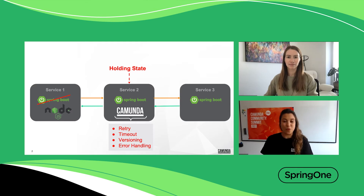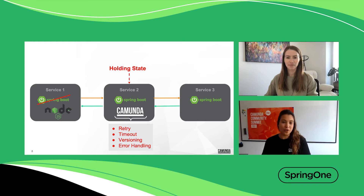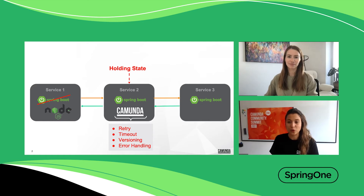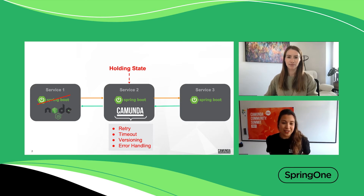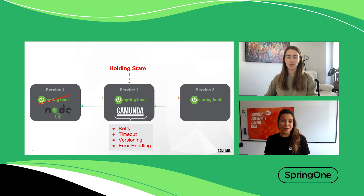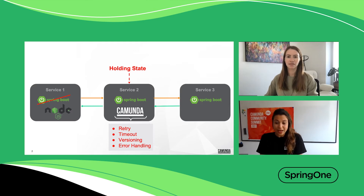By doing so, you also get additional features that will help you to reduce boilerplate code. Camunda helps you to define retries, timeouts, versioning, and error handling — and it does that with a graphical notation that is executable, based on an open standard called BPMN. It's even greater because you can also use it for a whole architecture of different services. You can use Camunda for microservice orchestration, and it also works in a polyglot system.